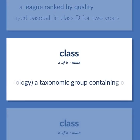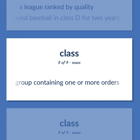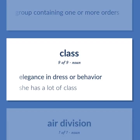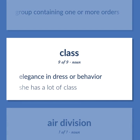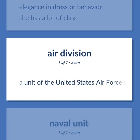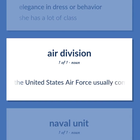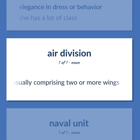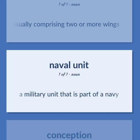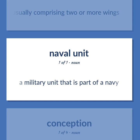Biology: A taxonomic group containing one or more orders. Elegance in dress or behavior — she has a lot of class. A unit of the United States Air Force usually comprising two or more wings. A military unit that is part of a navy.